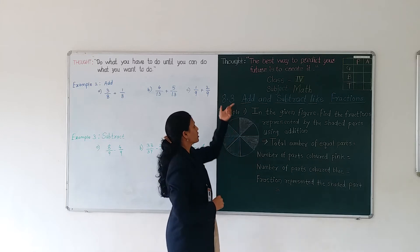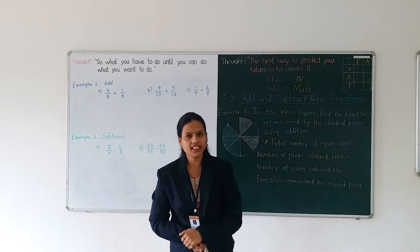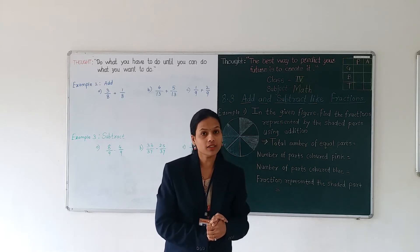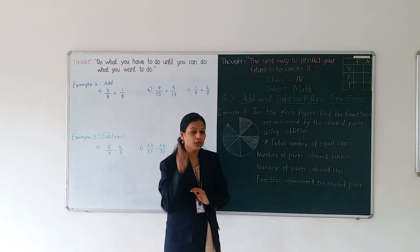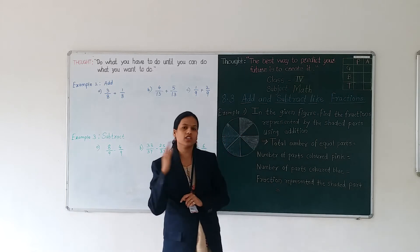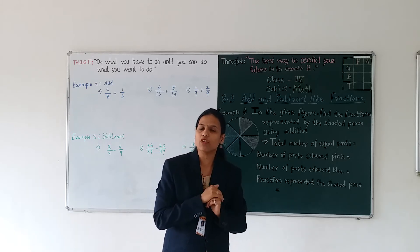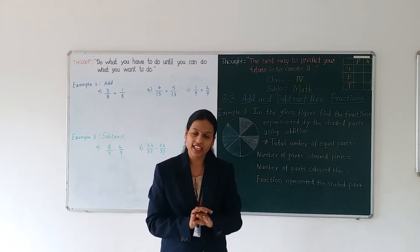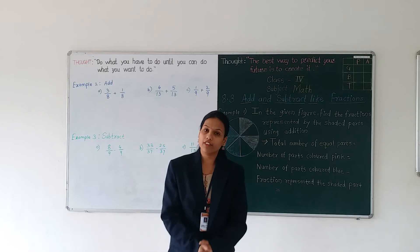Open your notebook and write down concept 8.3: add and subtract like fractions. How we can do addition and how we can do subtraction? With the numbers we have already learned, the same method we have to follow. But here we have fractions — like fractions — and we have to do addition and subtraction with like fractions, which are fractions with the same denominator. Mind you, students: we cannot do addition and subtraction with unlike fractions. Whenever we have to add or subtract, we should have like fractions.